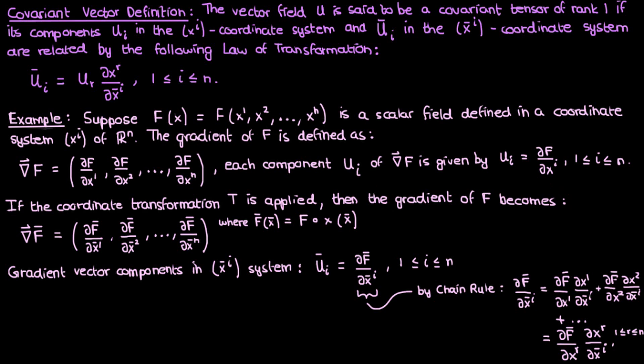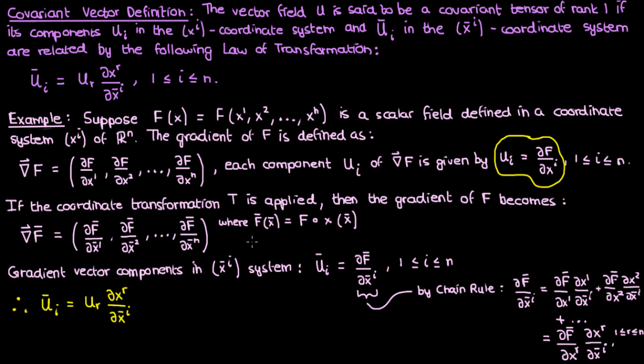Now the partial of f bar with respect to xr is actually just the gradient vector component from before the coordinate transformation. So we can write the new gradient vector component u sub i bar as the old gradient vector component u sub r times the partial derivative of the old coordinate xr with respect to the new coordinates xi bar. Again, r is being summed over because it appears twice on the right-hand side. If you look at this equation and compare it to the transformation law we had when we defined covariant vectors, they look pretty much the exact same. The indices in both equations are in the subscript, and the partial derivative being multiplied is the partial derivative of the unbarred coordinate with respect to the barred coordinate.